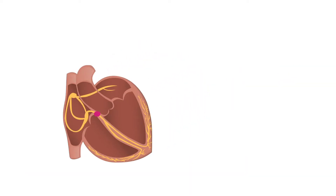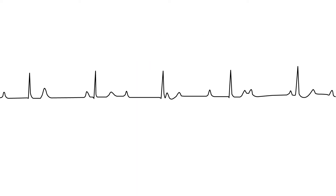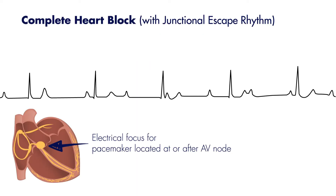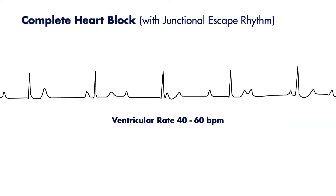Instead, the ventricles inherently fall back to another pacemaker. This will either be a junctional or ventricular focus. Here's an example of a junctional escape rhythm in a complete heart block. Note the dissociation between P waves and QRS complexes.